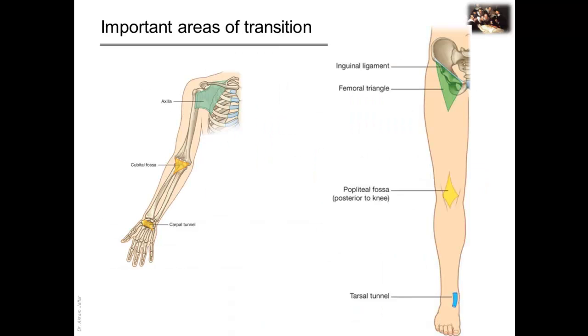In the lower limb, like in the upper limb, there are important areas of transition. These areas are through which structures pass between regions. In the lower limb, the femoral triangle, popliteal fossa, and tarsal tunnel are important areas of transition. They are comparable to the axilla, cubital fossa, and the carpal tunnel in the upper limb.